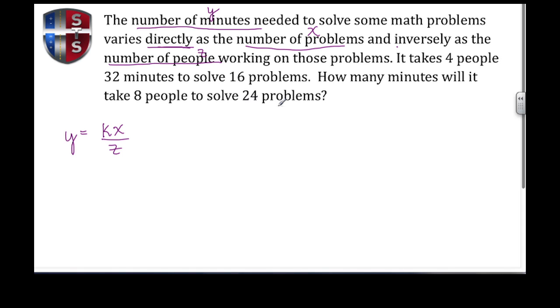The second sentence says it takes four people 32 minutes to solve 16 problems. We know y corresponds to the minutes, so that's 32. We're trying to find the constant of variation. x corresponds to the number of problems, which is 16, and z is the number of people, which is 4.